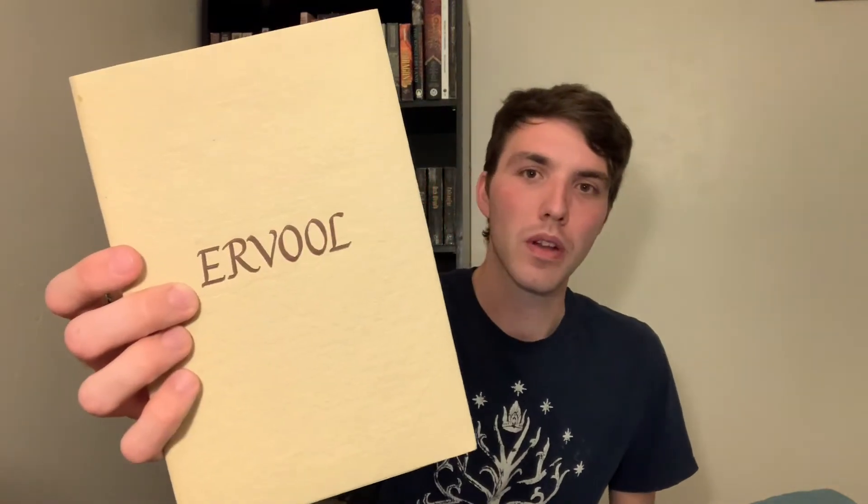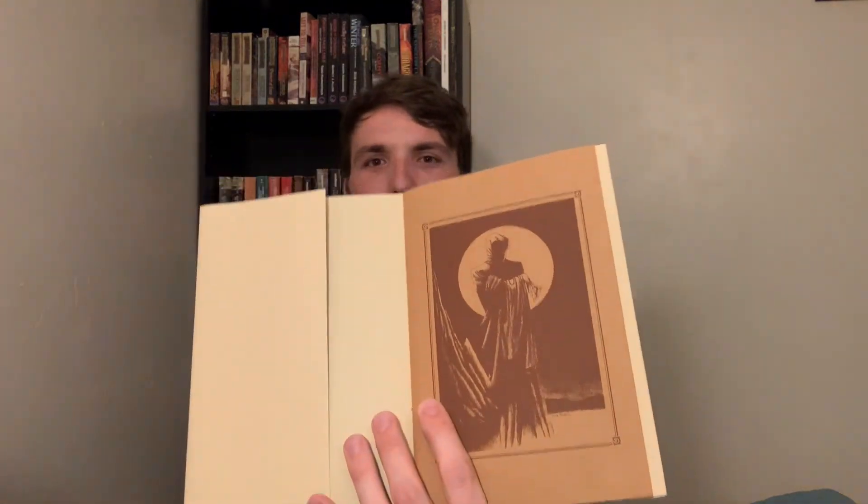Another one, even older than Vance — whose Dying Earth came out in 1950 or '51 — is Ervool by Fritz Leiber. This is a chapbook from the 80s, so not a very popular one, but it tells a story about the last being on Earth, which is not actually human. It's very interesting. In some ways it's a dead Earth rather than a dying Earth — it's already dead, but not quite, because there's one person left on it. And it's actually a key point in the story that everything dies on Earth but it still isn't the end of time.